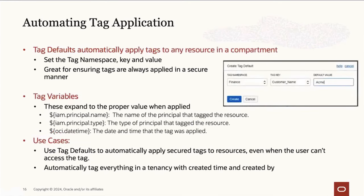You can automate tag application with tag defaults. Best practice is to create the tag default at the same time as creating your compartment. If you create resources in a compartment before setting up a tag default, those resources won't be retroactively tagged. So it's important to set those up together.